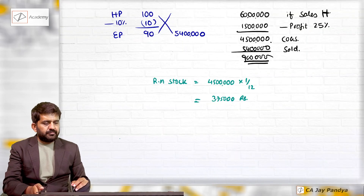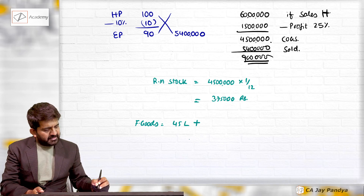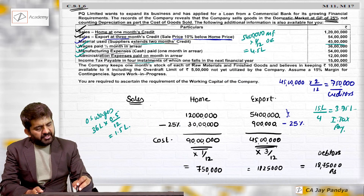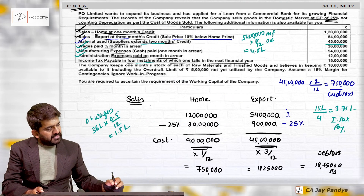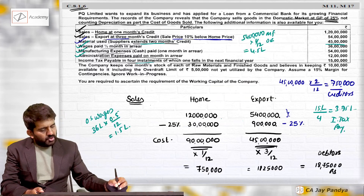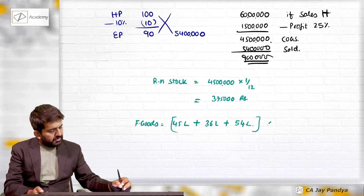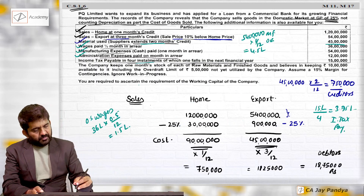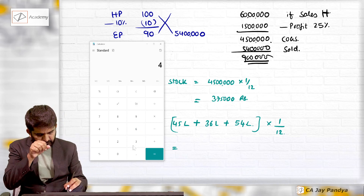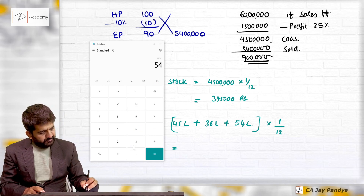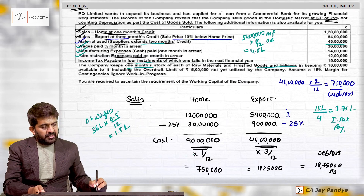For finished goods stock, I include raw material cost (45 lakhs), wages (36 lakhs), and manufacturing expenses (54 lakhs), but not administrative expenses or income tax. All are held for one month. Finished goods stock = 45 plus 36 plus 54 divided by 12 = 11 lakh 25,000.